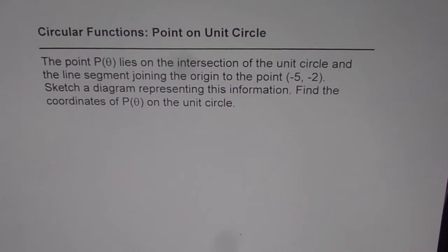The point P(θ) lies on the intersection of the unit circle and the line segment joining the origin to the point (-5, -2). Sketch a diagram representing this information. Find the coordinates of P(θ) on the unit circle.